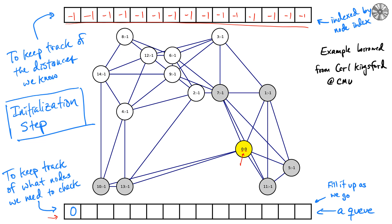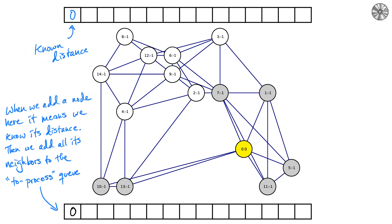We also create a queue that keeps track of which nodes we need to check — essentially tracking the forefront of our knowledge. Starting at node zero, we put that node as the first element in our queue, indicated in blue. We then write down the known distance to node zero, which is indeed zero.